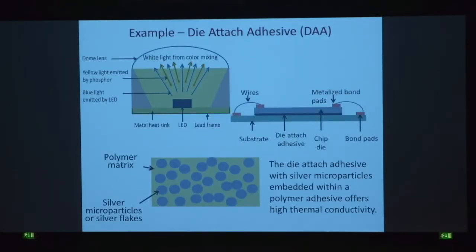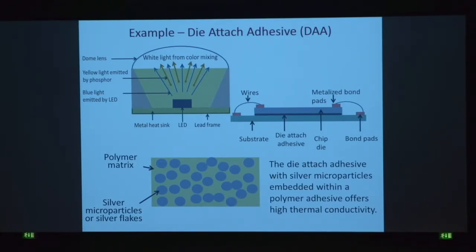Let's look at an example that we have already commercialized — the LED light. The gallium nitride chip in the middle emits blue light; with the phosphor, we get yellow and then white. The chip is attached to the substrate by what we call the die-attach adhesive. The light conversion efficiency for this LED chip is about 50%, meaning 50% of the remaining energy is converted to heat — up to about 110 degrees C at the junction. So we need a die-attach adhesive to move the heat away, with a polymer matrix of epoxy and silver microparticles.